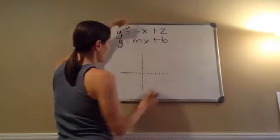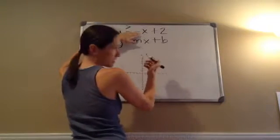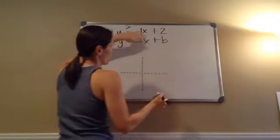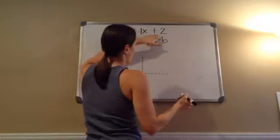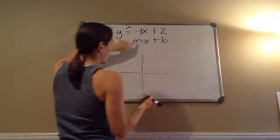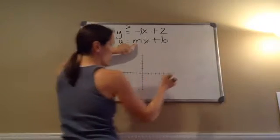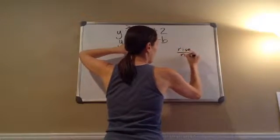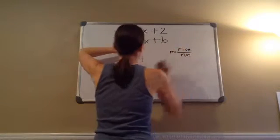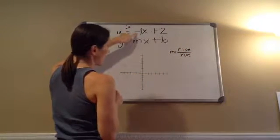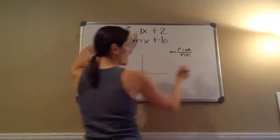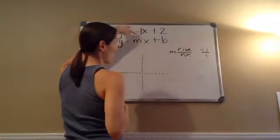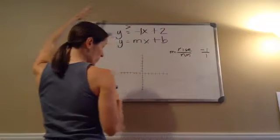This negative x — because there's not a number there, I know it's actually a 1. So negative 1, and b is 2. If you remember, m is my slope, which is my rise over my run. So negative 1 would be negative 1 over 1 — that's my rise over 1 run.